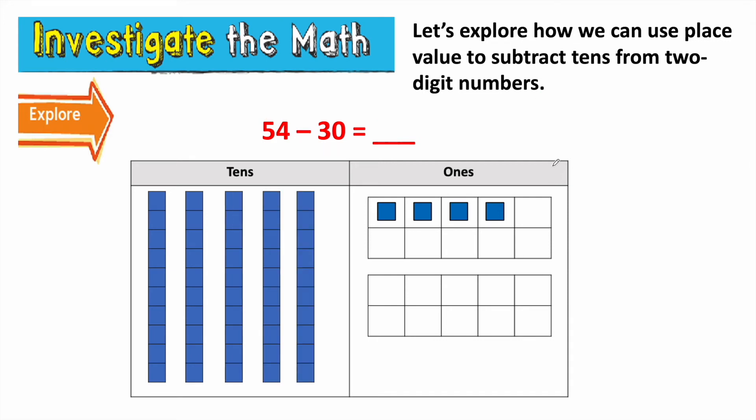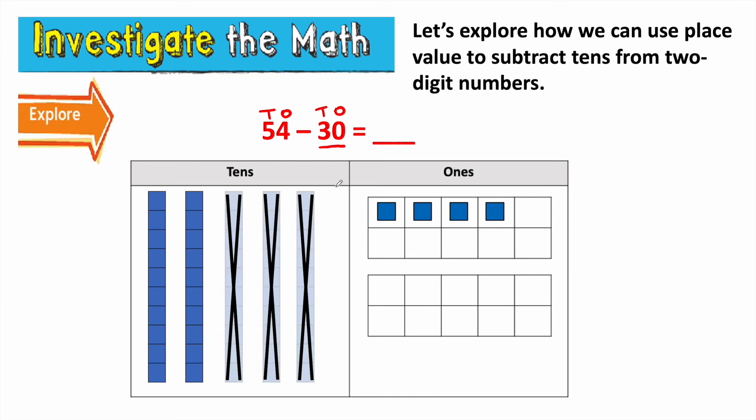Well, let me tell you another way that I could subtract 54 minus 30. 54 is still my whole. So it still has five tens and four ones. And I'm still going to take away 30, which means that I'm taking away three tens. So I could take my tens from my tens.